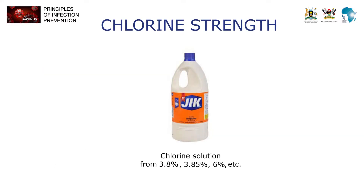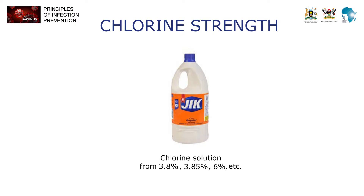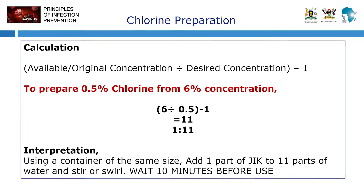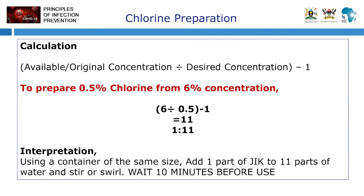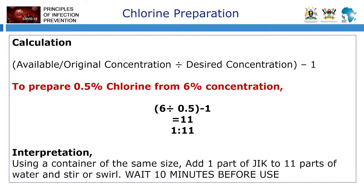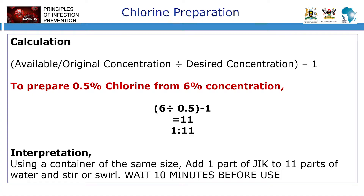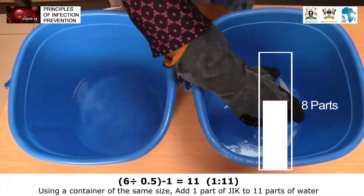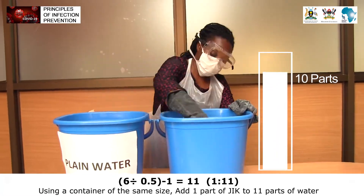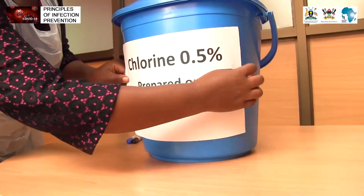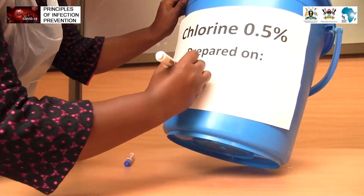Chlorine solution comes in different strengths ranging from 3.8% to 6%. To prepare 0.5% chlorine using 6% solution, we divide the available concentration, which is 6%, by the desired concentration, which is 0.5%, and subtract 1. The answer will be 11, meaning in 11 parts of water we add one part of jik, and we have 0.5% chlorine solution.